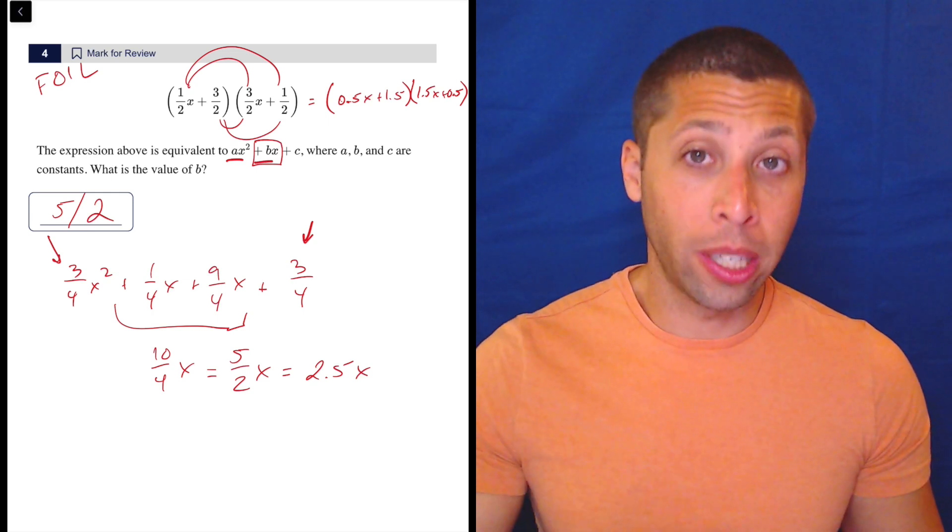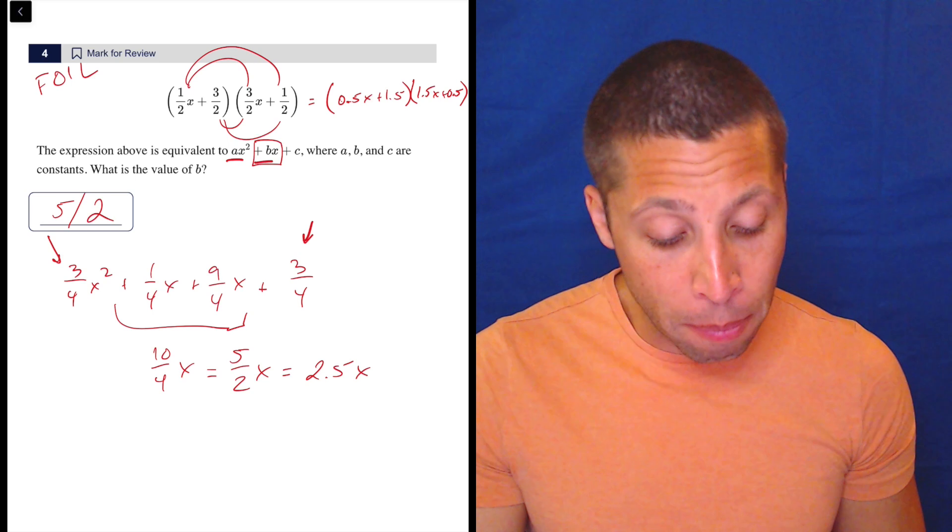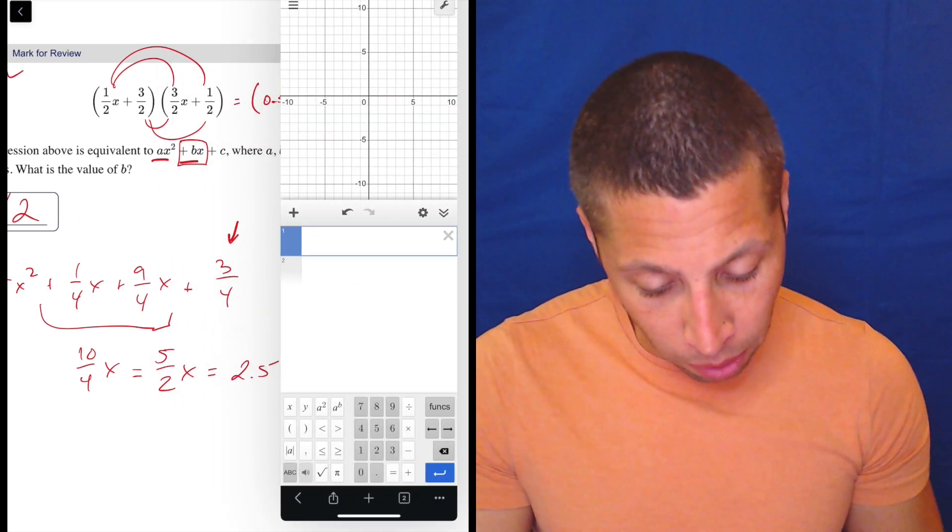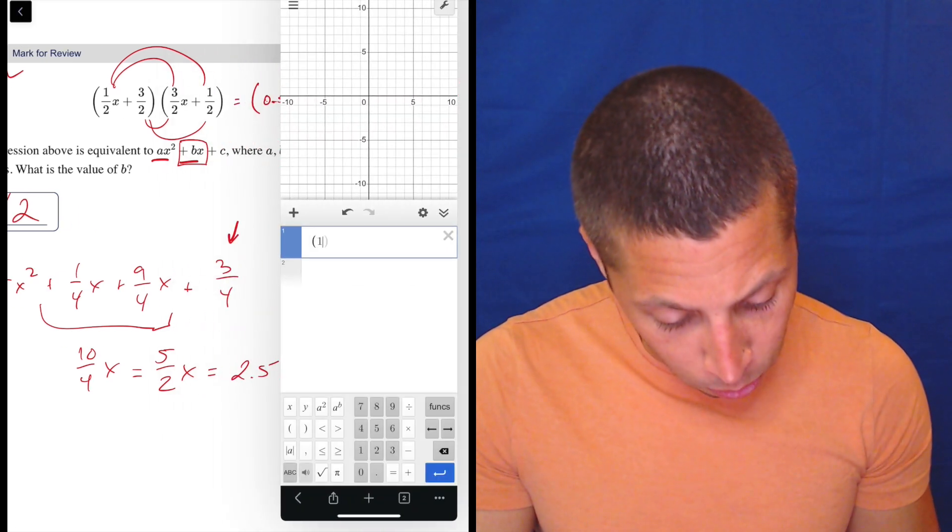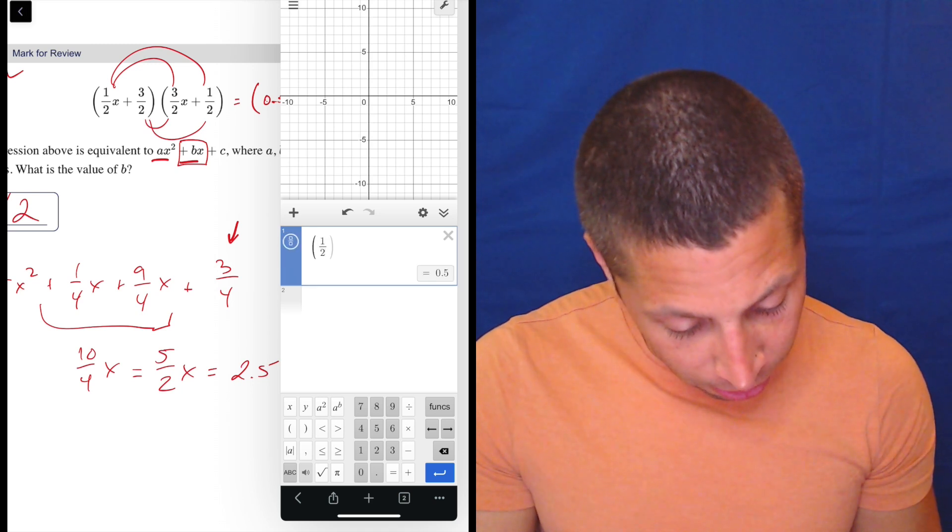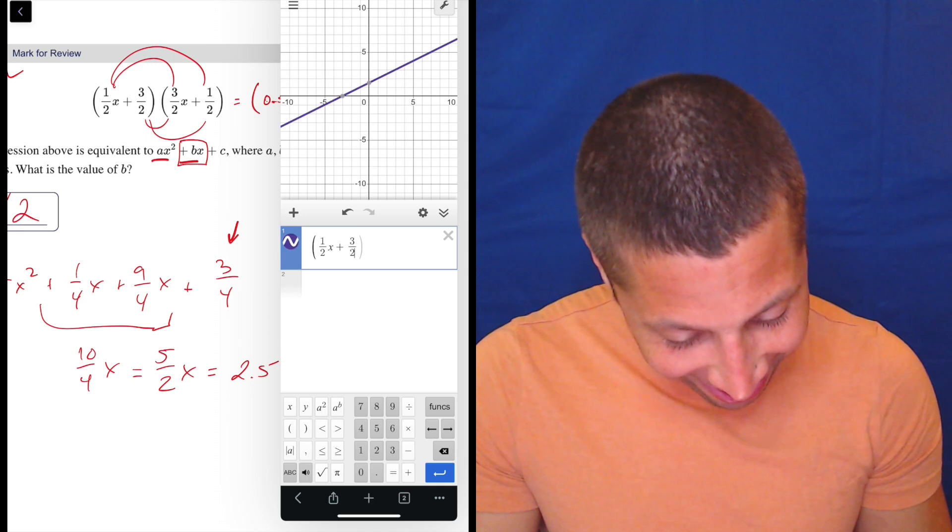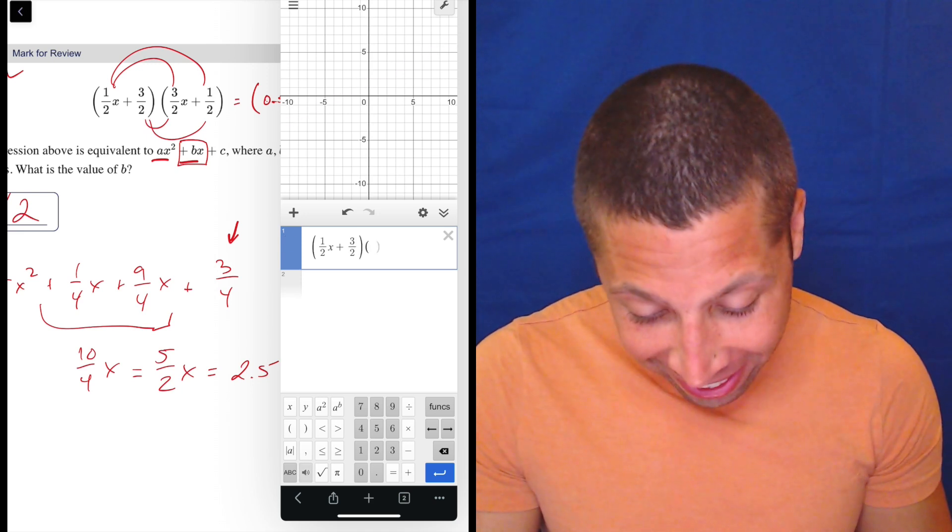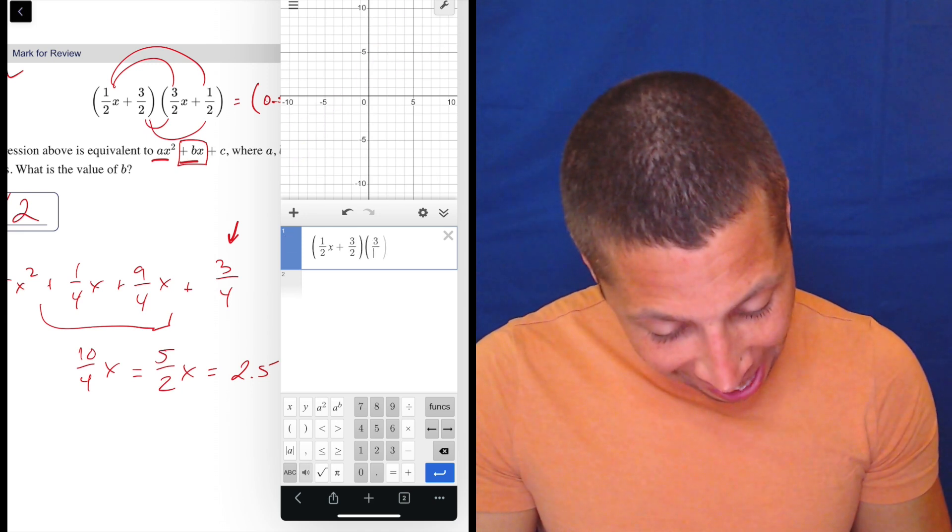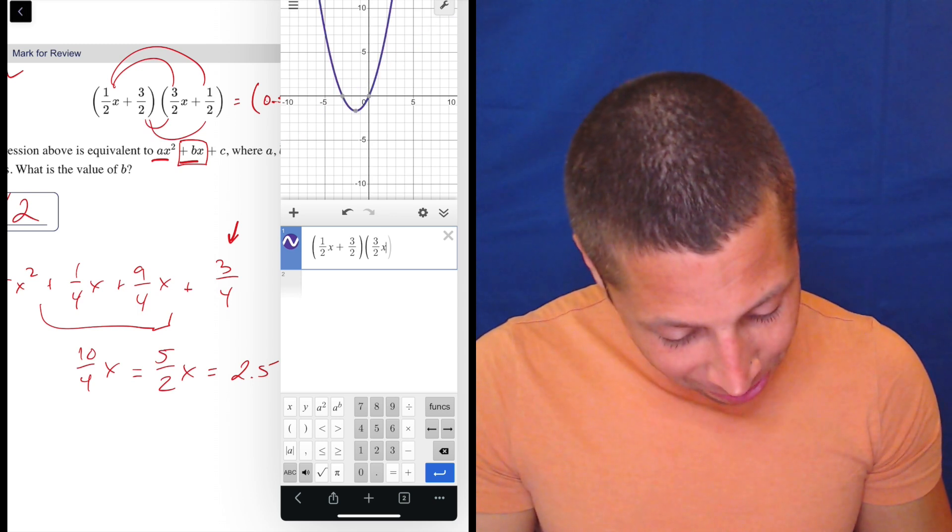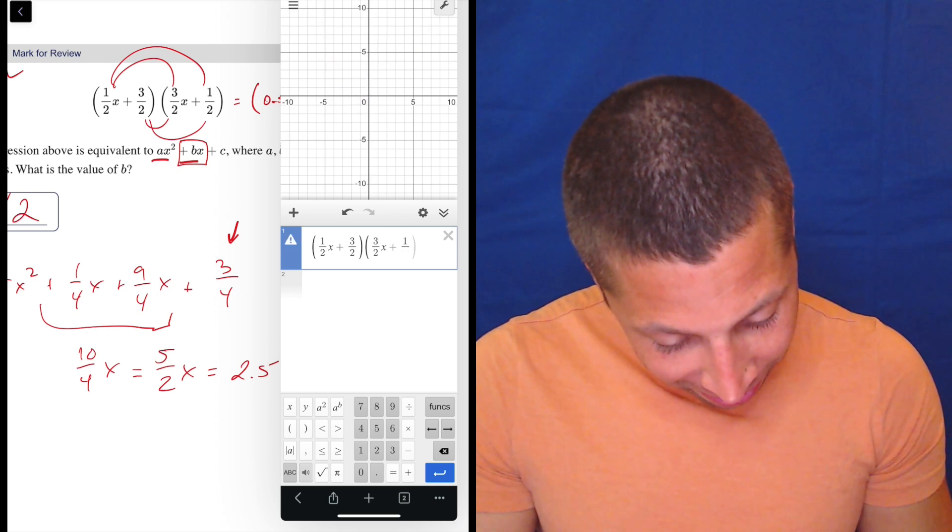If this were the first module and I had time to go back and make sure, I would probably double-check my foiling and see if it works. So I would do 1/2 X plus 3/2 times 3/2 X plus 1/2. So I get a parabola.